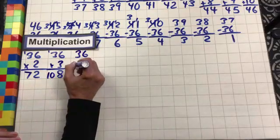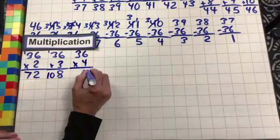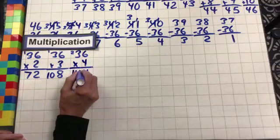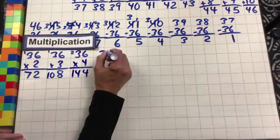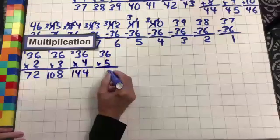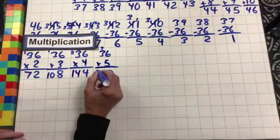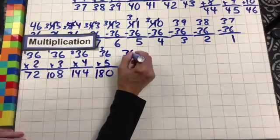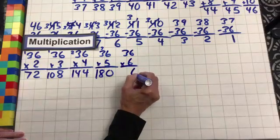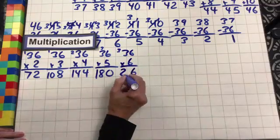4 times 36: 4 times 6 is 24 — drop the 4, carry the 2. 4 times 3 is 12 plus 2 is 14. 5 times 36: 5 times 6 is 30 — drop the 0, carry the 3. 5 times 3 is 15, plus 3 is 18. 36 times 6: 6 times 6 is 36 — drop the 6, carry the 3. 6 times 3 is 18, plus 3 is 21.